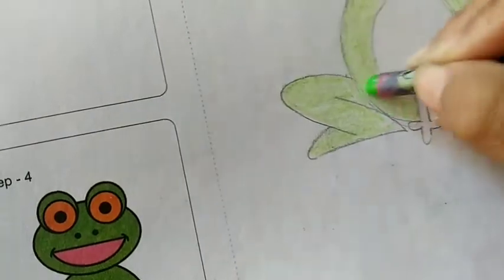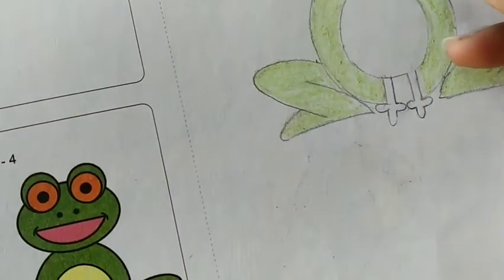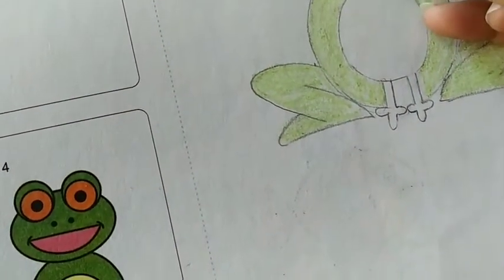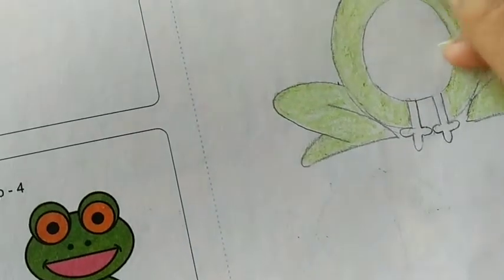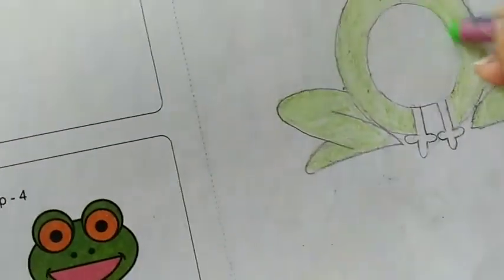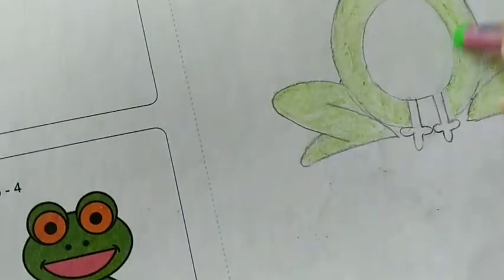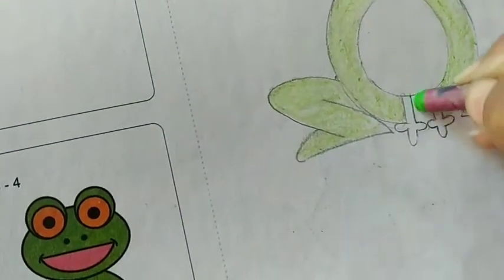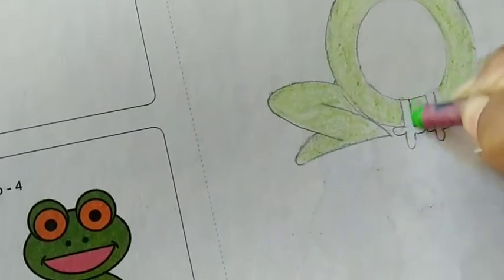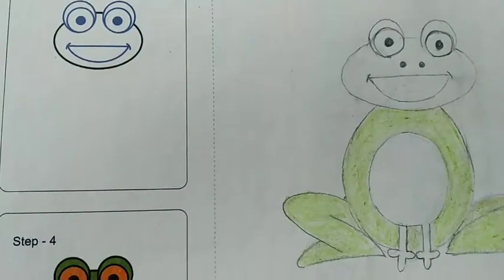First do inside outline. Then direction should be same while you are coloring. And at last, do the color twice. So here this portion is complete. So you have to color the other part also.